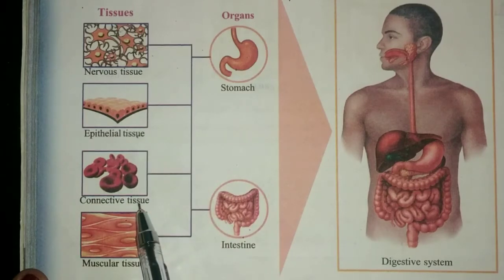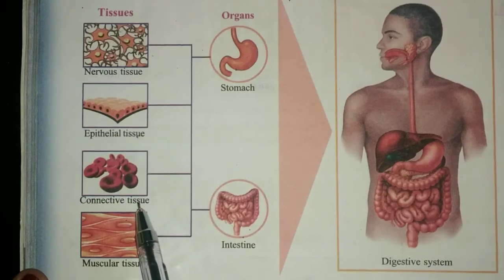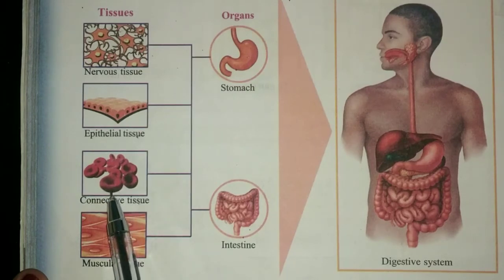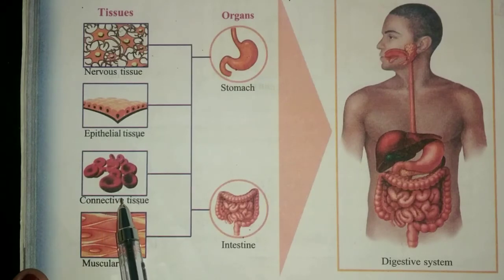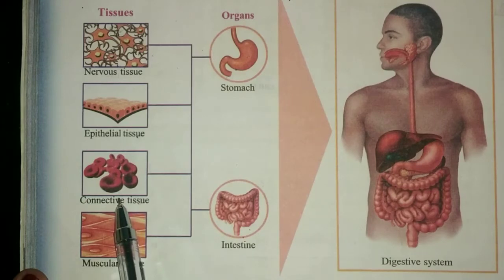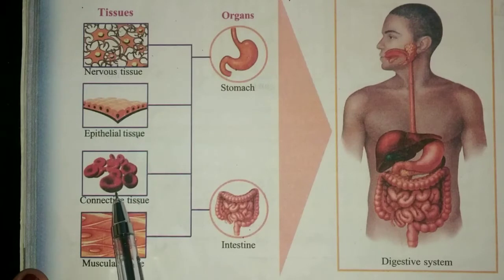The next one is connective tissue. Blood tissues are shown here. There are different types of connective tissue, like bone, cartilage, blood, fibrous tissue, etc. The function of blood cells is the conduction of materials and providing immunity.